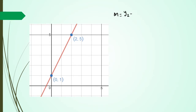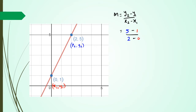Gradient is equal to change in y divided by change in x. In this case I have x2 and y2 here and x1 and y1 here. So my gradient is going to be 5 minus 1 divided by 2 minus 0, which means my gradient is 4 over 2, so m is equal to 2.